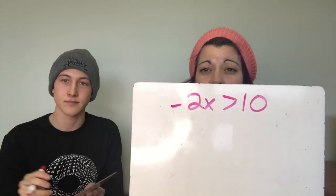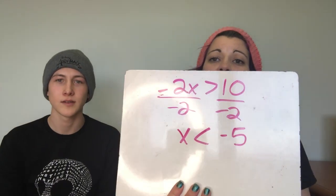Now we're going to solve inequalities. You solve just like an equation except for one rule: if you multiply or divide by a negative to solve, you have to flip the sign. For example, if I have negative 2x is greater than 10, I divide both sides by negative 2 and flip the sign, giving x is less than negative 5.